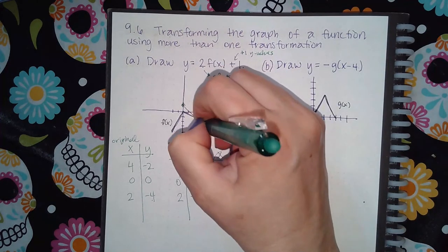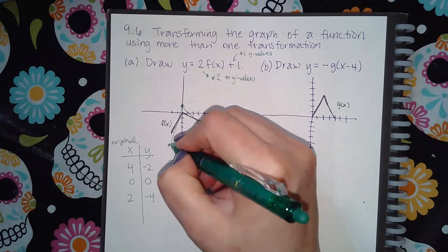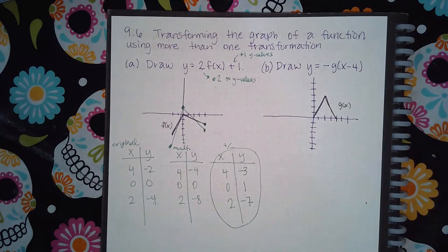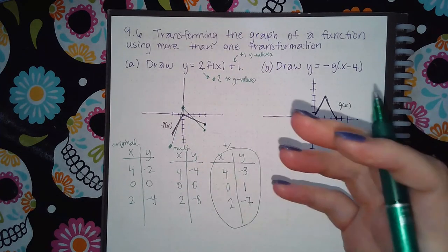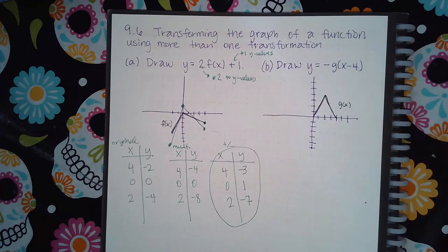And so then we draw that, connect those dots, and now we have our graph. So it's shifted up one, and it's gotten a lot narrower than it was before.